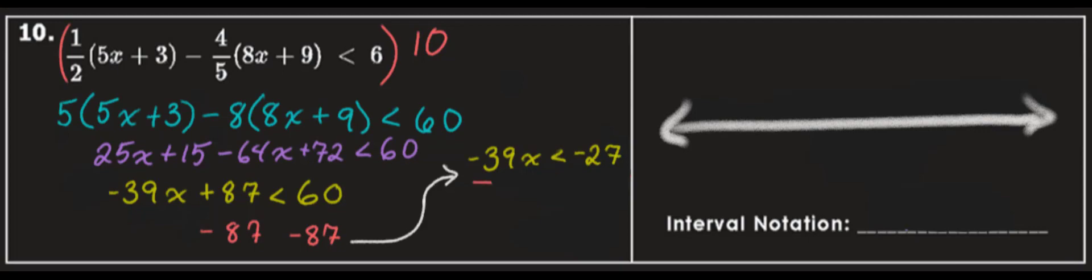Divide by negative 39. Flip the sign. Negative 27 over negative 39 reduces to 9 over 13.